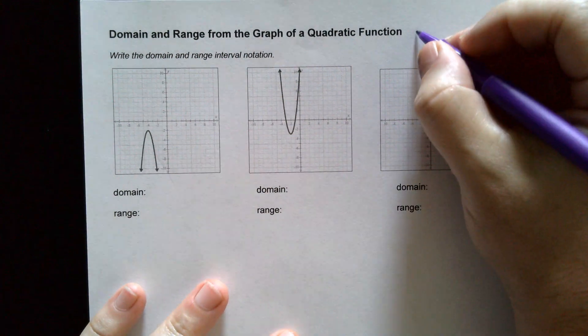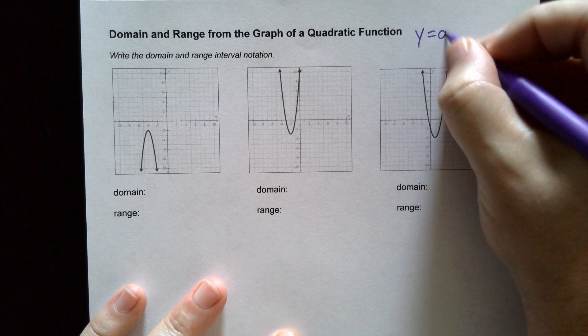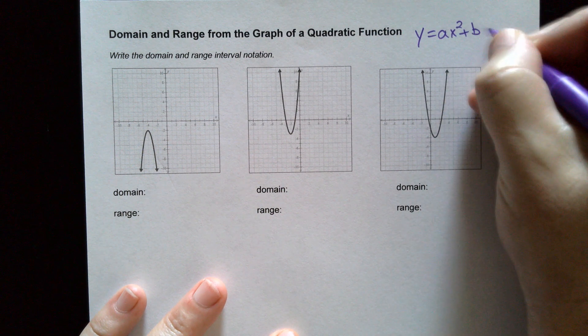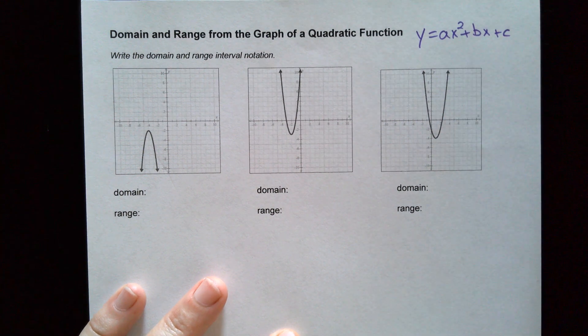Let's keep in mind that a quadratic function looks like this: y is equal to ax squared plus bx plus c.